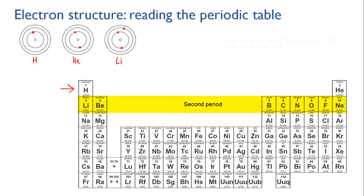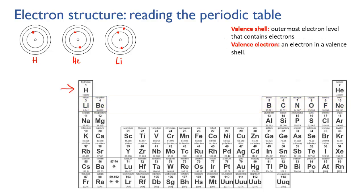That's why lithium is the beginning of the second row, or period. For all the elements lithium to neon, the second electron level is their outermost level — so the horizontal period tells you the highest level that has electrons in it.